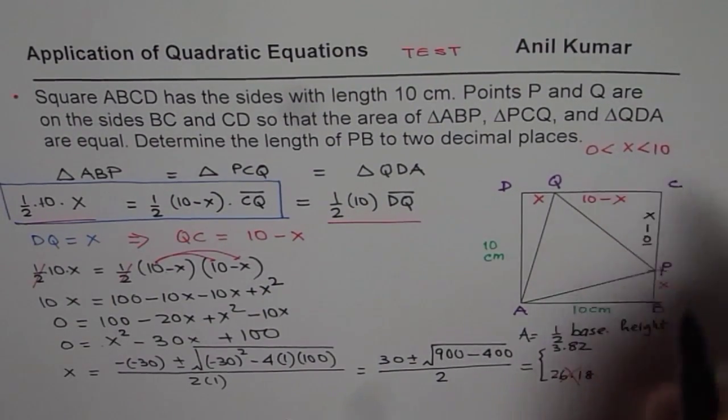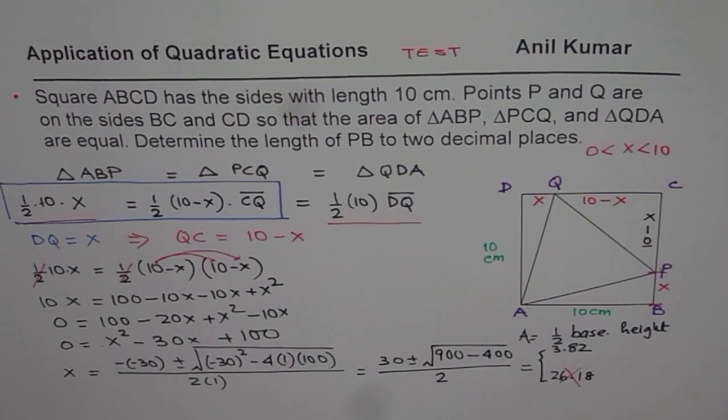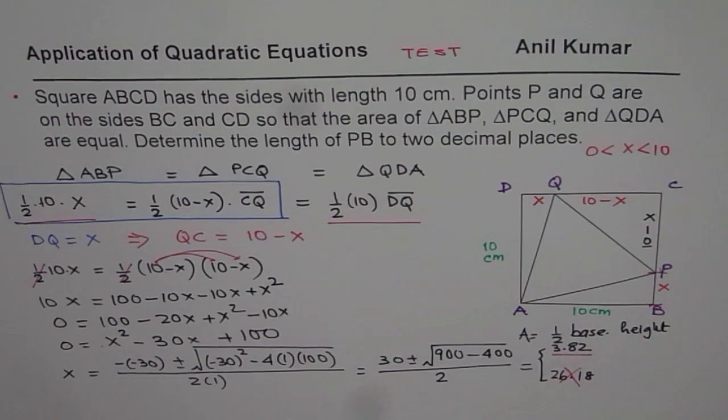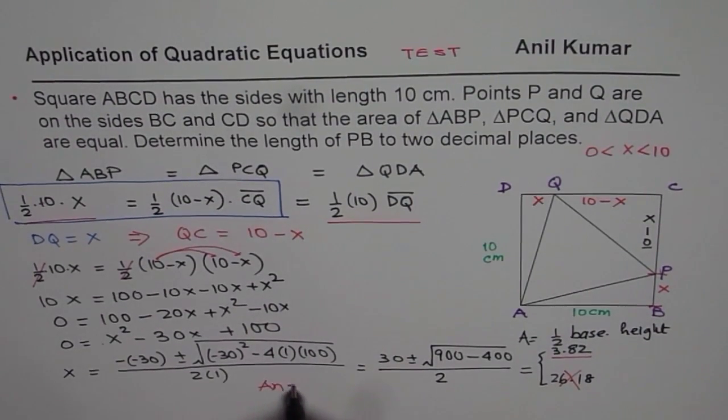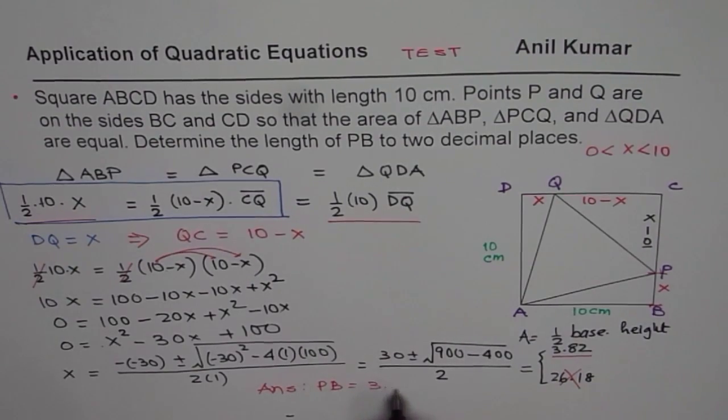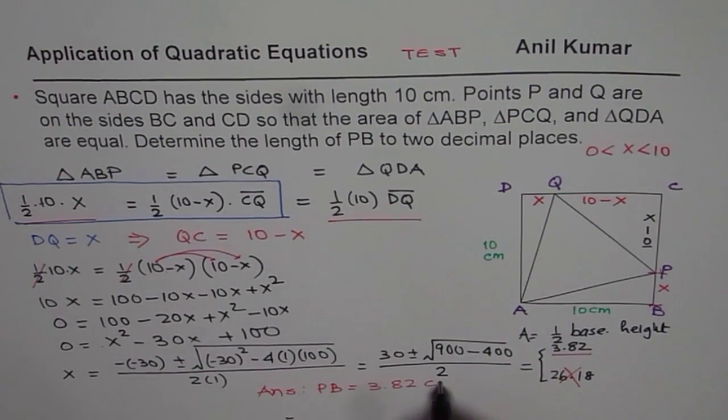Since we know X is between 0 and 10, it cannot be more than 10, so that is not valid. And therefore, we get one solution, that is PB is 3.82 centimeters. So that is our answer, we say length PB is equal to 3.82 centimeters.